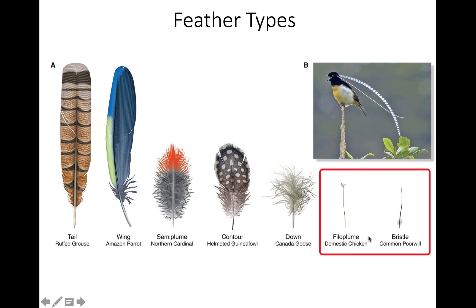There are two hair-like feather types. Filoplumes are mechanosensory, helping the bird feel the distribution of feathers so muscles can control their placement. Bristles tend to be much larger and thicker, also serving mechanosensory functions but in a different way — often associated with the bill and sometimes the feet.